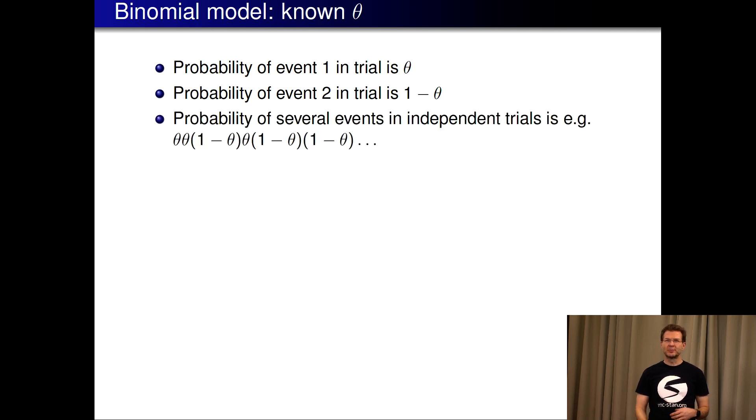If there's a sequence of these events and these are independent trials, based on probability calculus we can combine these probabilities by multiplying them. If we get red it's theta, we get yellow times 1 minus theta, and so on, and we get the sequence of these probabilities and we can combine them.